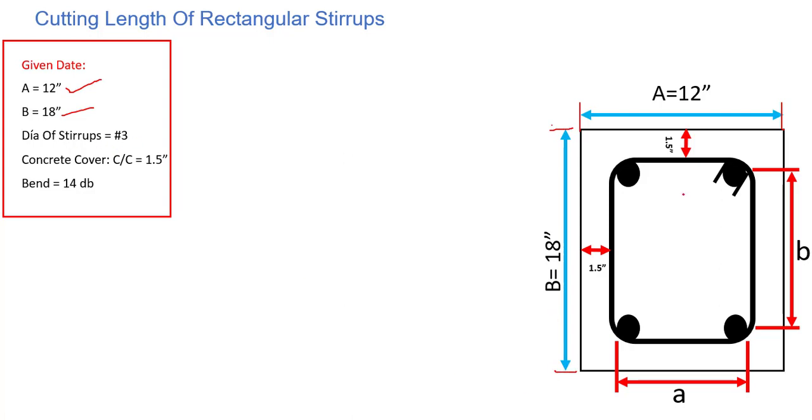The diameter of stirrup that we are using here is number 3, which is 3/8 inch. The concrete cover or clear cover is 1.5 inches. And the bend that we are using here, these bends, we are using as 14 db, where db means diameter of bar.